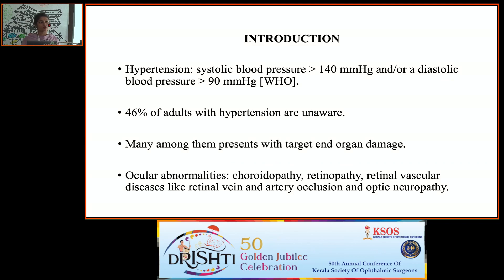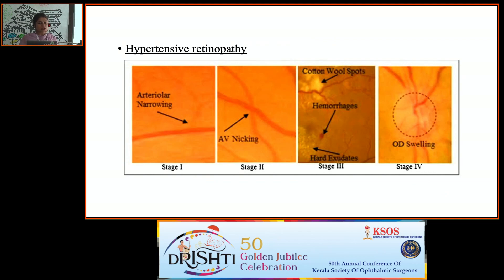WHO defines hypertension as a systolic blood pressure more than 140 mmHg and/or a diastolic BP of more than 90 mmHg. Unfortunately, more than 46% of adults are unaware of having this condition and many present with target organ damage. Hypertension causes ocular abnormalities like choroidopathy, retinopathy, vascular occlusions, and optic neuropathy. Keith Wagner has graded hypertensive retinopathy into four stages.